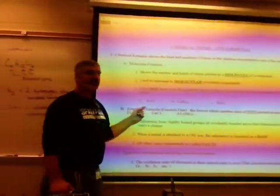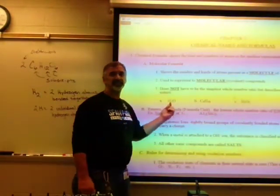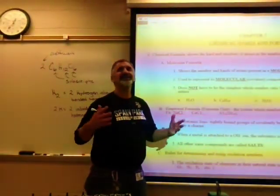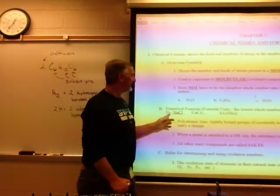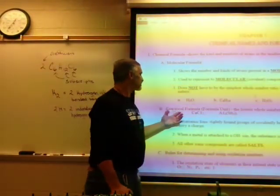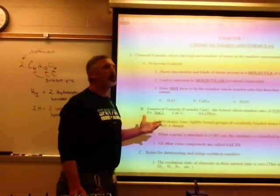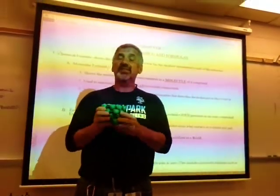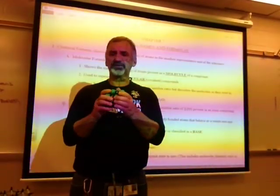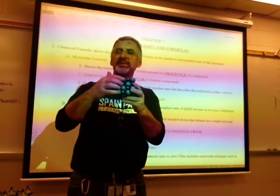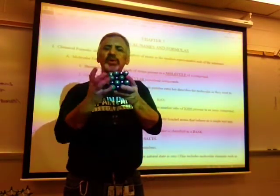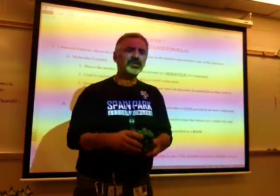In ionic compounds, we use what's called the empirical formula or formula unit — that's the lowest whole number ratio. Ionic compounds don't form molecules. They form large crystal structures where positive is surrounded by negative, surrounded by positive, and so on. There's no real molecule, so all we can do is give the simplest ratio of ions in the crystal. We call that the empirical formula. Empirical means simple.